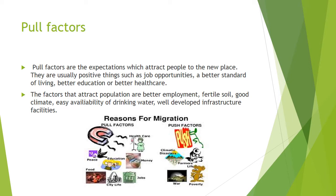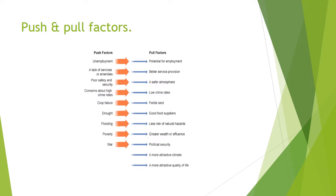The reasons for migration are push factors and pull factors. Pull factors work like a magnet — health care, money, job, education, peace, food, and city life are all pull factors. Push factors include climate, poverty, war, and difficult farming life. All these negative things come under push factors.